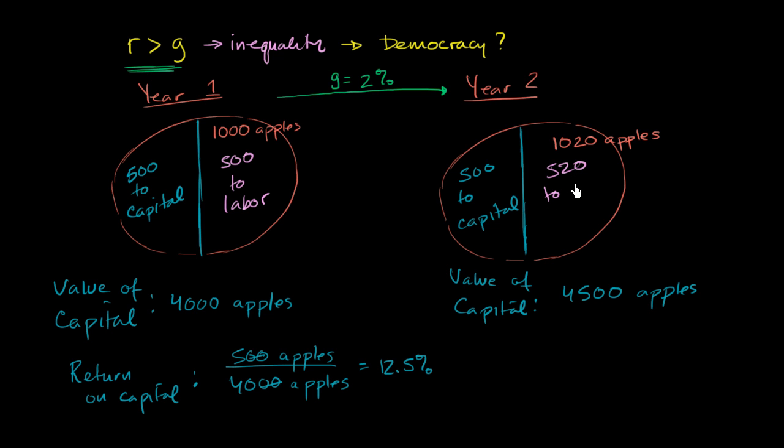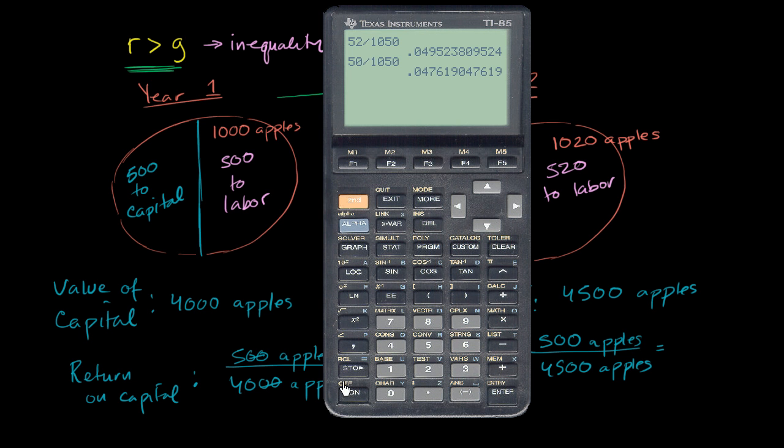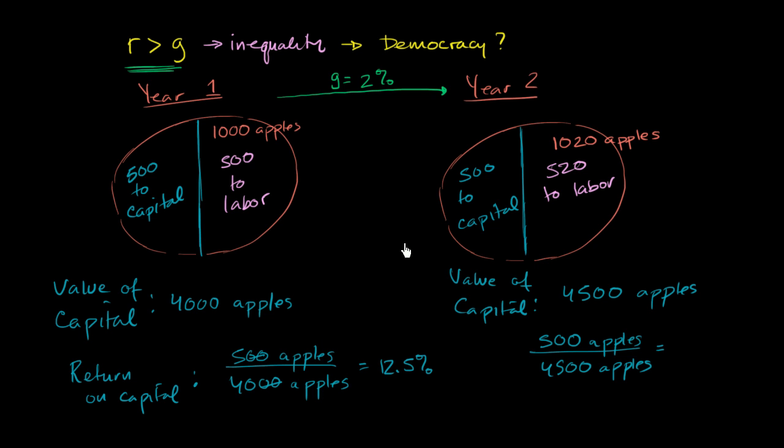So now what's the return on capital? The return on capital now is going to be still 500 apples divided by 4,500 apples, which is going to be 1 ninth, which is 0.1111. So it's going to be approximately 11.1 percent.